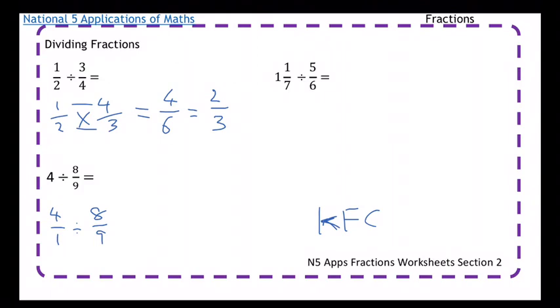I'm going to keep the first fraction the same - 4 over 1. I'm going to flip the second one upside down and change it to a multiply. This time I'm going to check the diagonals, which are both divisible by 4. Now I can multiply. So 1 times 9 is 9. 1 times 2 is 2. So the answer is 9 over 2.